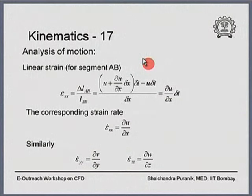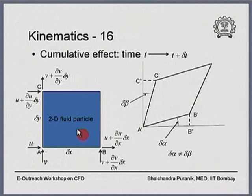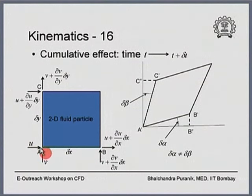Regarding the second question on linear strain rate, looking at slide 16 and the horizontal segment AB: the x-direction velocity at A is different from that at B. As the fluid particle moves over time delta-t, point A is pushed by a different amount while point B is pulled by a different amount, so the length of segment AB changes.